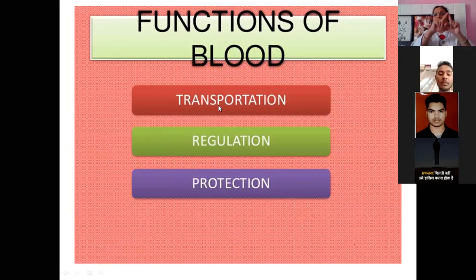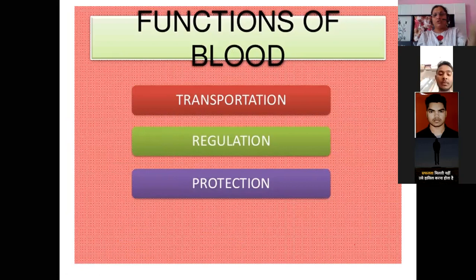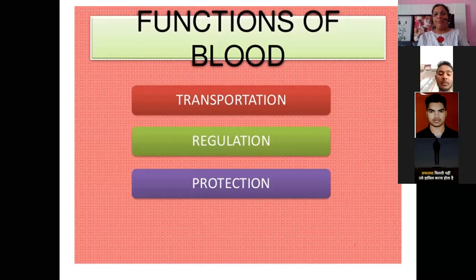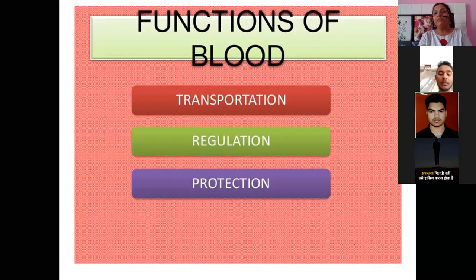Transportation means blood circulates throughout the whole body — from the heart to each and every part of the body, from head to toes — delivering oxygen and nutrients to all tissues and organs. Regulation means blood helps maintain your body temperature. Protection means blood defends the body against disease — WBCs provide a defense system. As discussed earlier when covering immunity, WBCs protect the body through phagocytosis and other immune mechanisms.